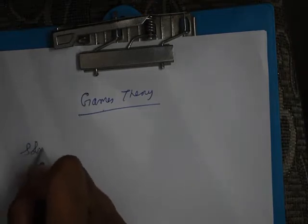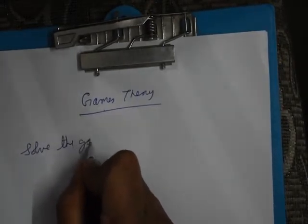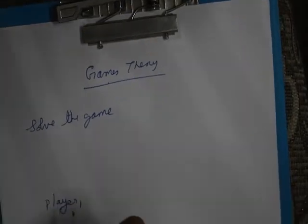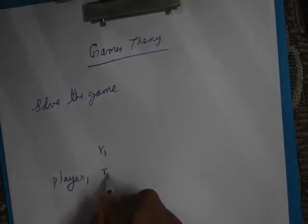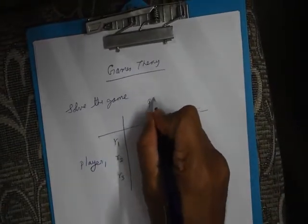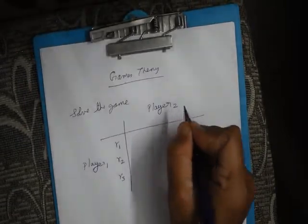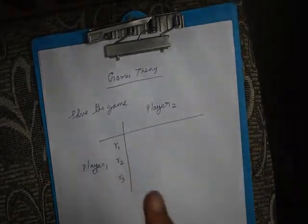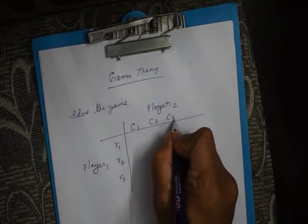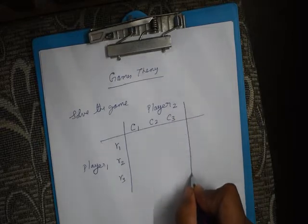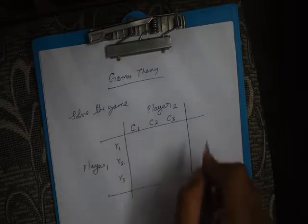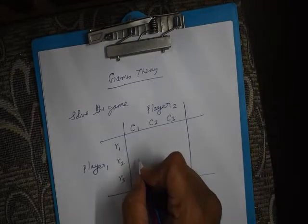You will get the question in the form of 'Solve the Game,' where you will be given a matrix with Player 1. There can be any number of rows — for example, 3 rows. There will be another player, Player 2. Generally we have only a 2-player game theory. Both players can have any number of strategies, so the matrix can be a square or rectangle of any size.